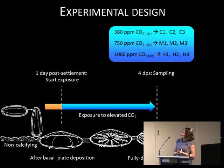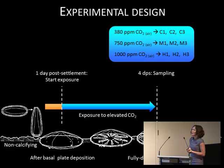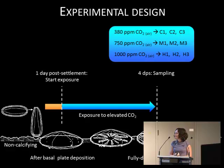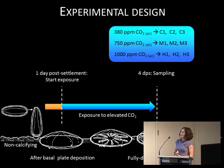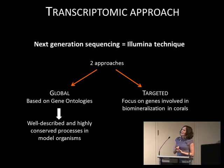We exposed primary polyps of Acropora millepora to different conditions of elevated CO2: a control condition, and 750 and 1,000 ppm of CO2, which correspond to the medium and high scenarios predicted by the Intergovernmental Panel on Climate Change. We had three biological replicates for each condition, and we exposed them for a short-term stress experiment of three days. After three days, we sampled those individuals, extracted the genomic material, and subjected them to high-throughput sequencing using the Illumina technique.